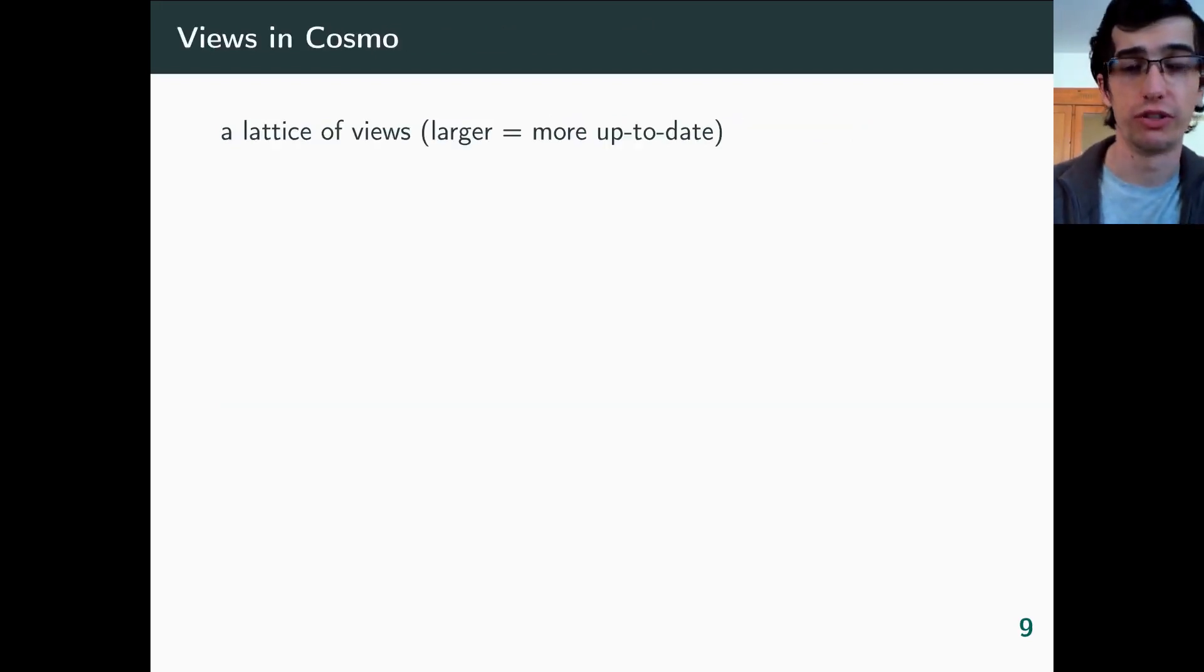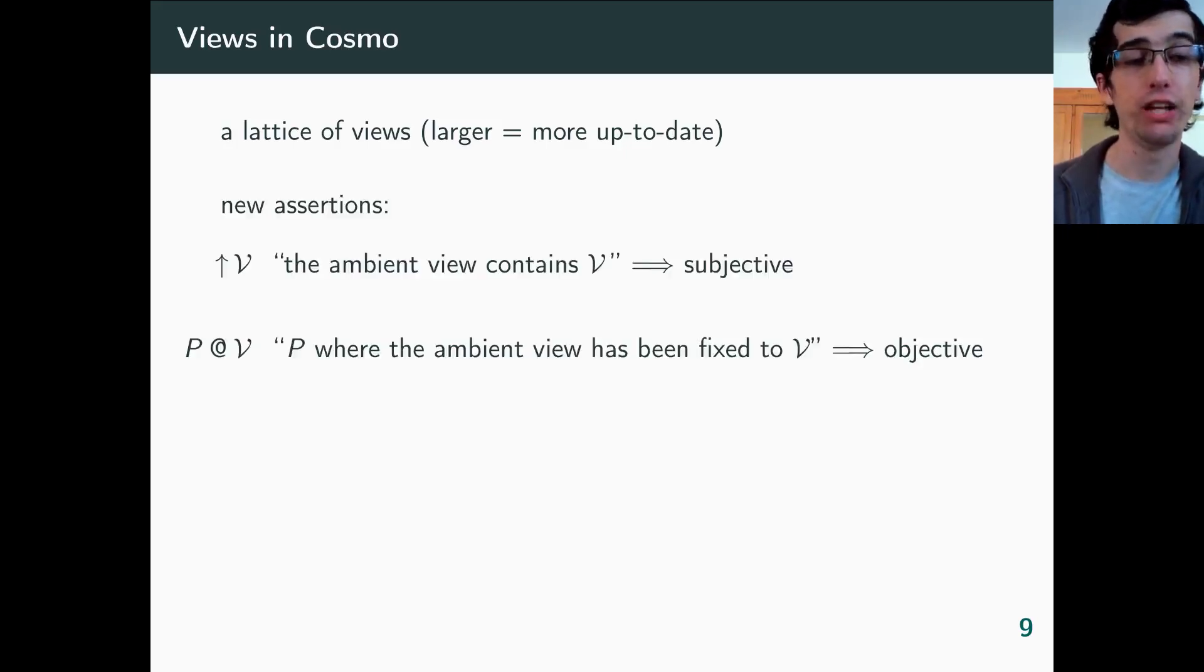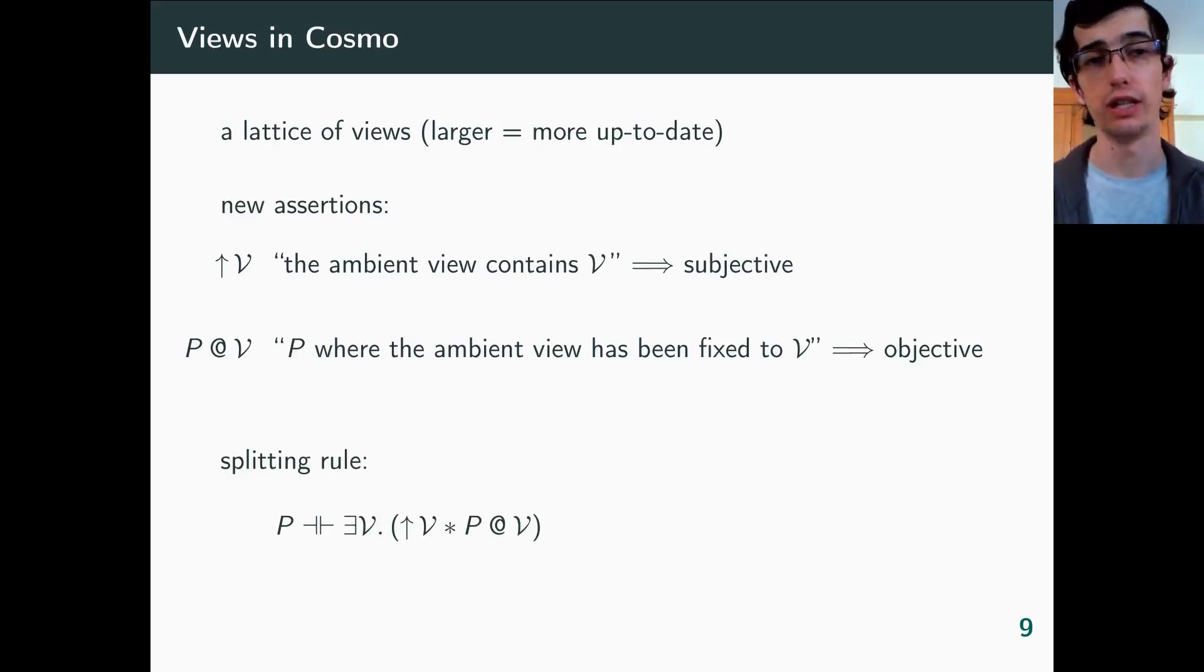So it's time for me to explain how views and synchronization work in Cosmo. We have an abstract notion of views. It comes equipped with an inclusion relation. The larger, the more up-to-date. And to manipulate views, we have new kinds of assertions in the logic. First, upper row V means that the ambient view contains V. So it's the archetypical subjective assertion. And second, P at V, where P is any assertion, means P with the ambient view fixed to V. P at V is objective, even if P is subjective.